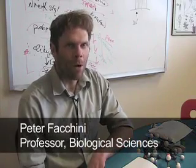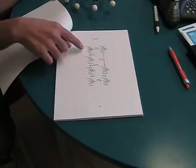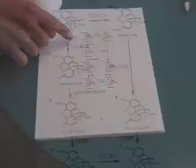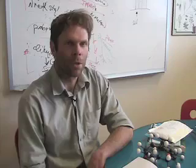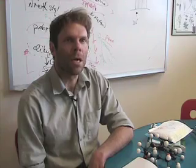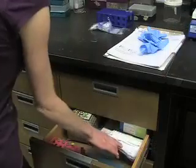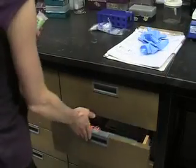We have discovered the genes in opium poppy that are responsible for the biosynthesis of codeine and morphine. We now know genetically and biochemically how the plant is uniquely capable in nature of making those important painkillers.